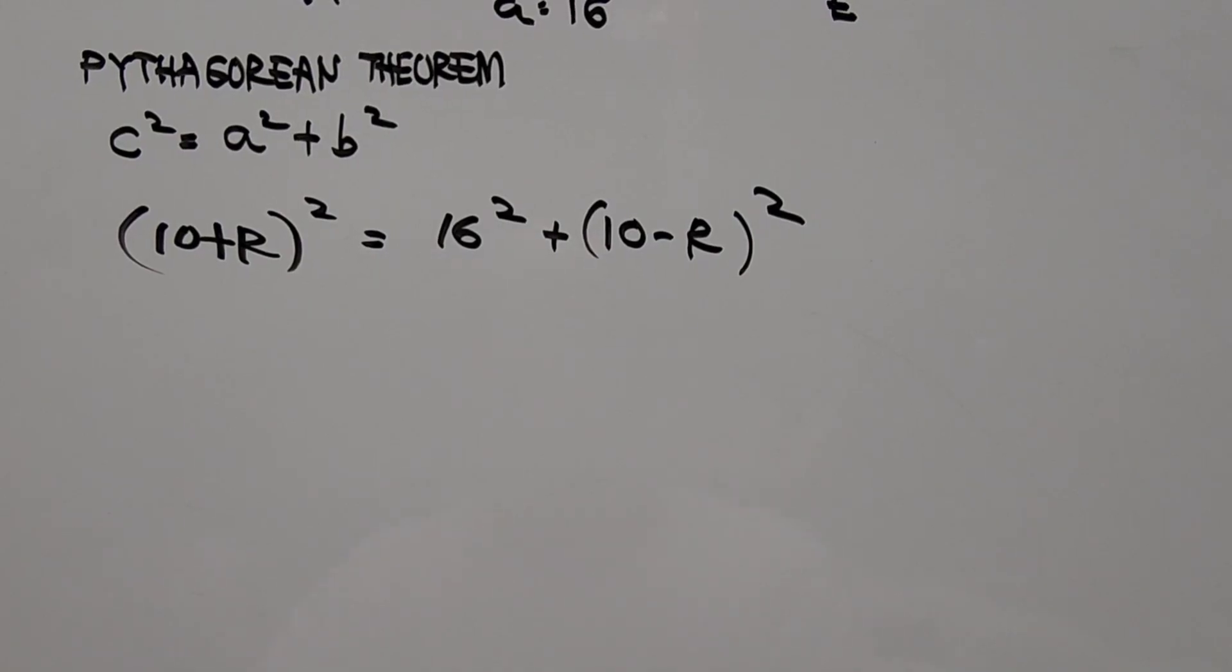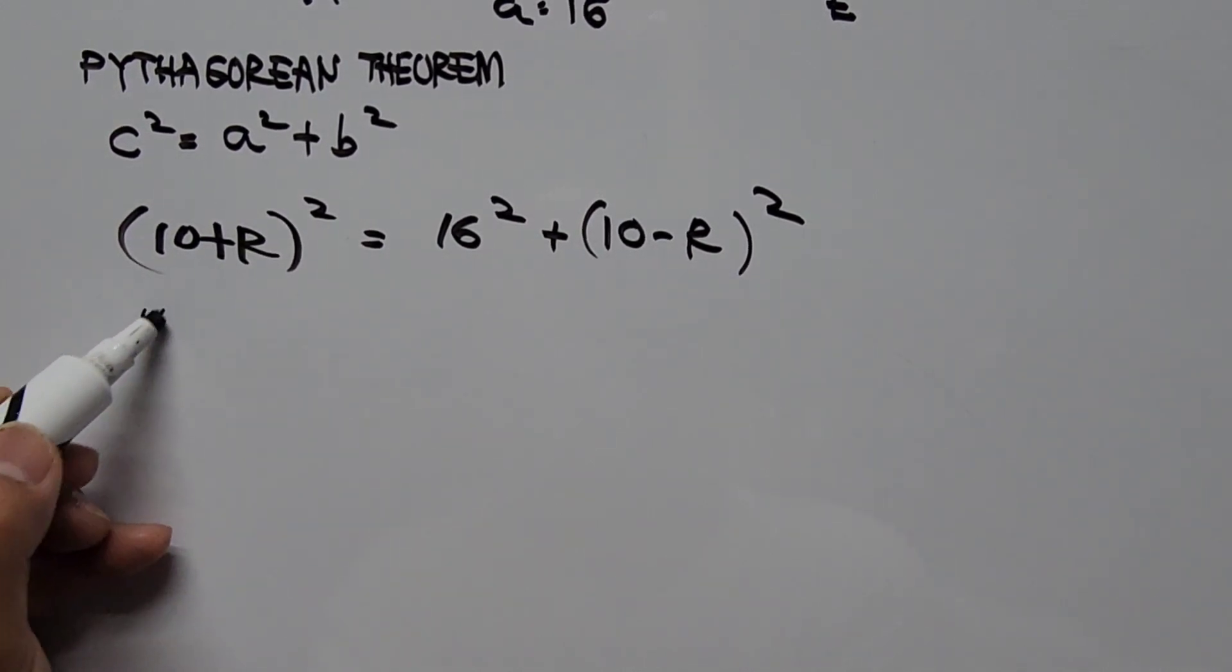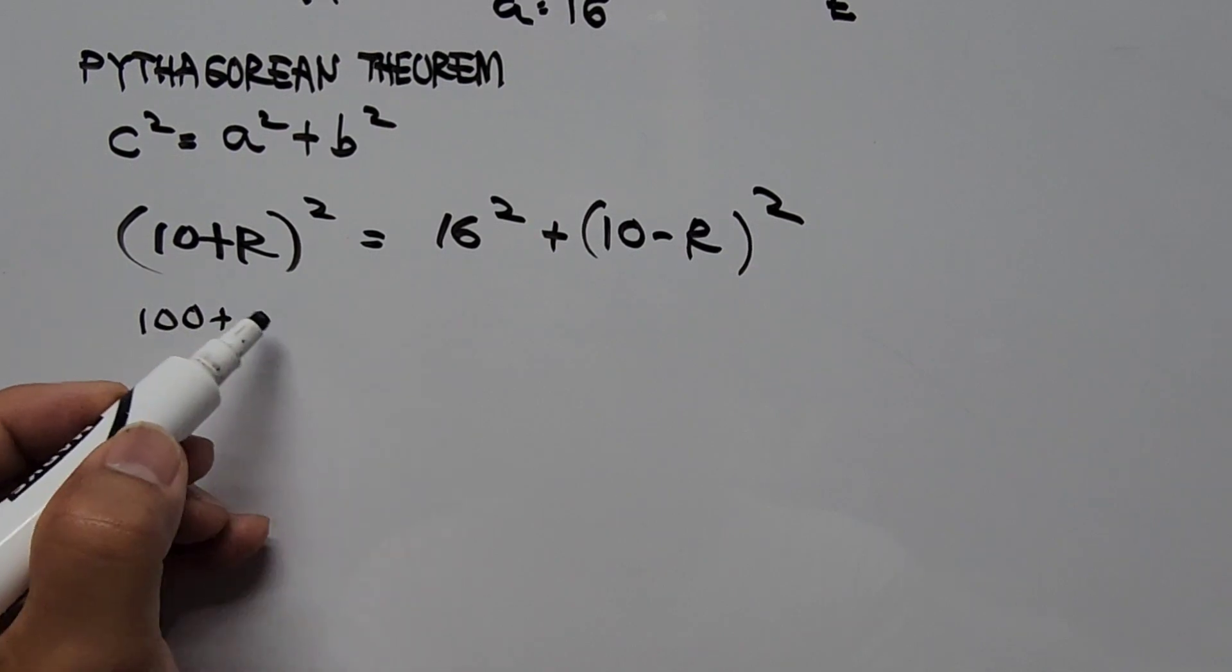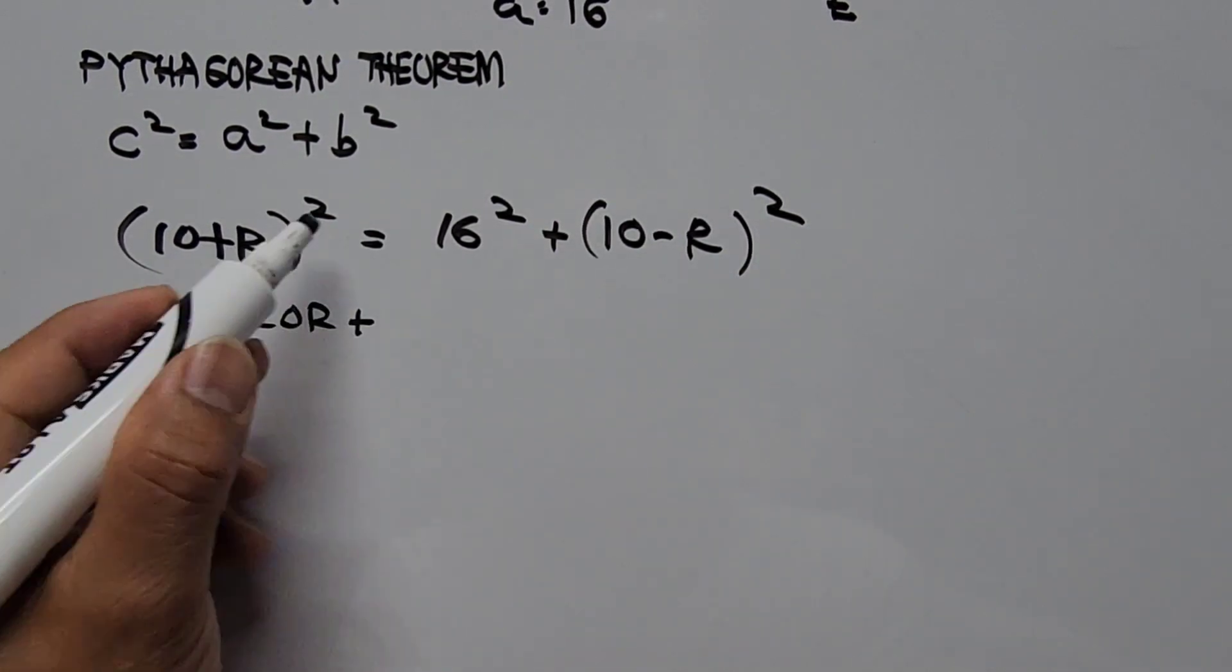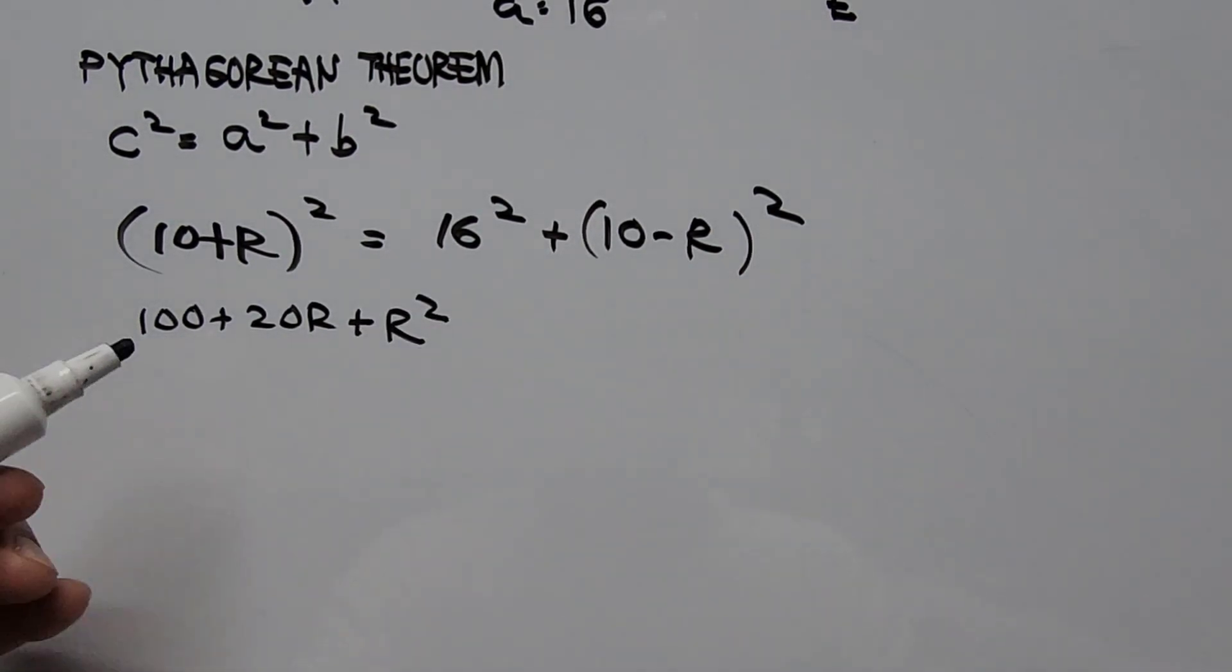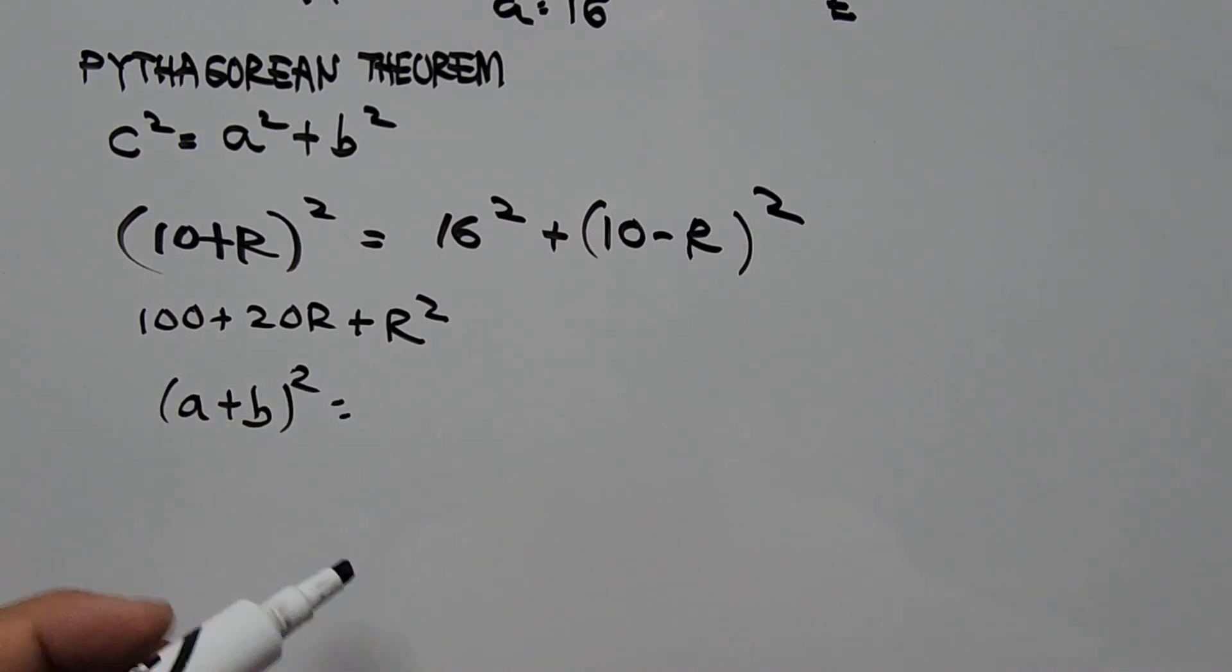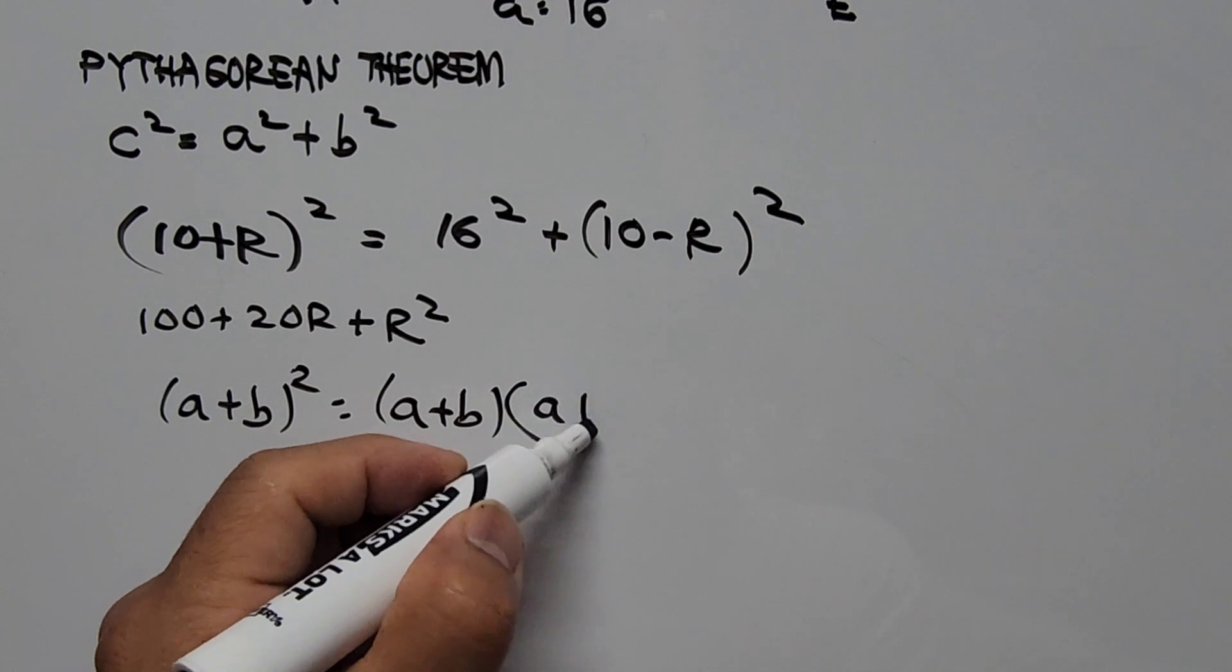Simplify the equation. 10 plus R squared is 10 squared is 100 plus 2 times 10 times R, that's 20R plus R squared. So this is from the square of the sum of two numbers.